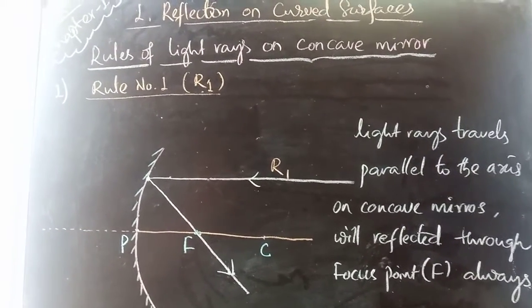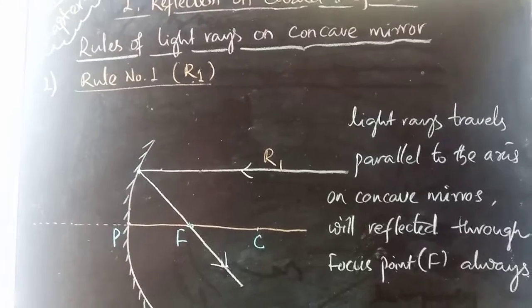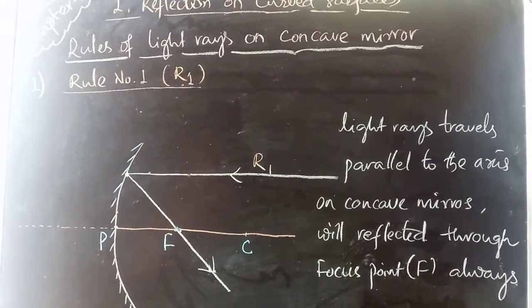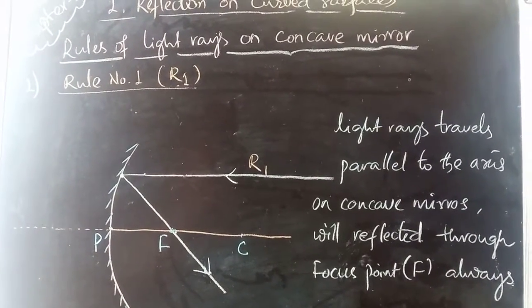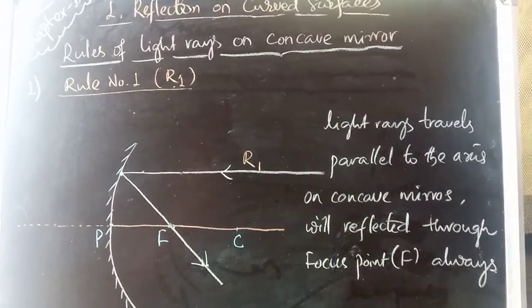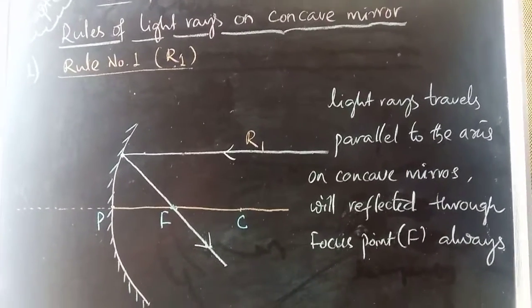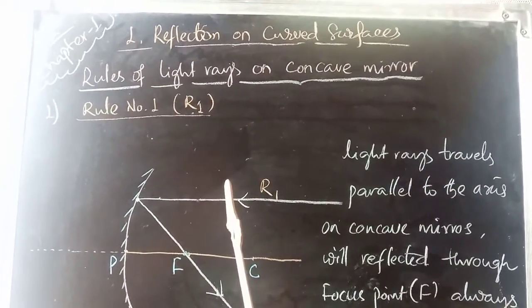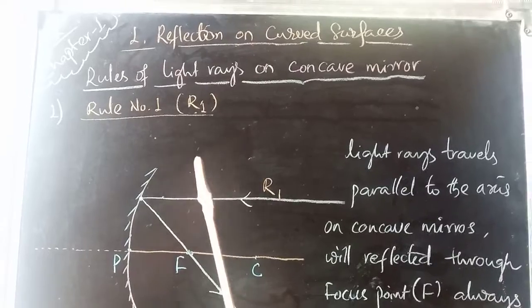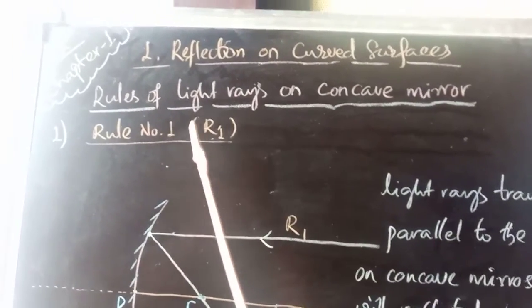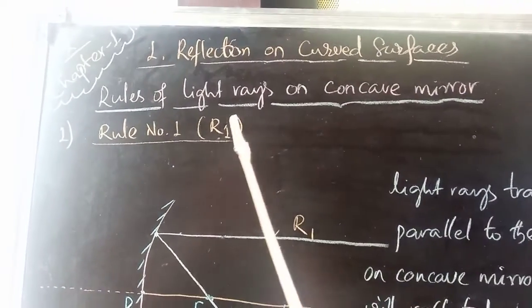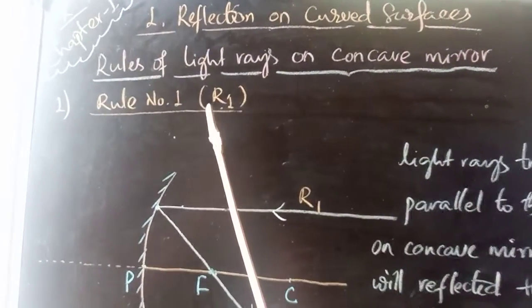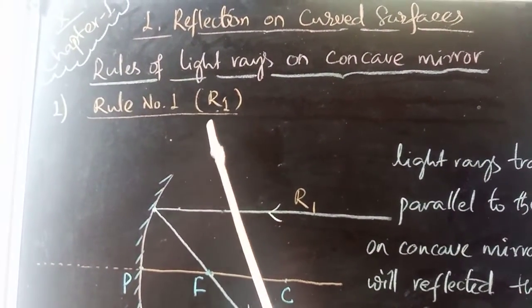There are some rules for light rays on the concave mirror. First, let me take a concave mirror — there are three rules. Here I will write: Rules of Light Rays on Concave Mirror. This is Rule Number One.